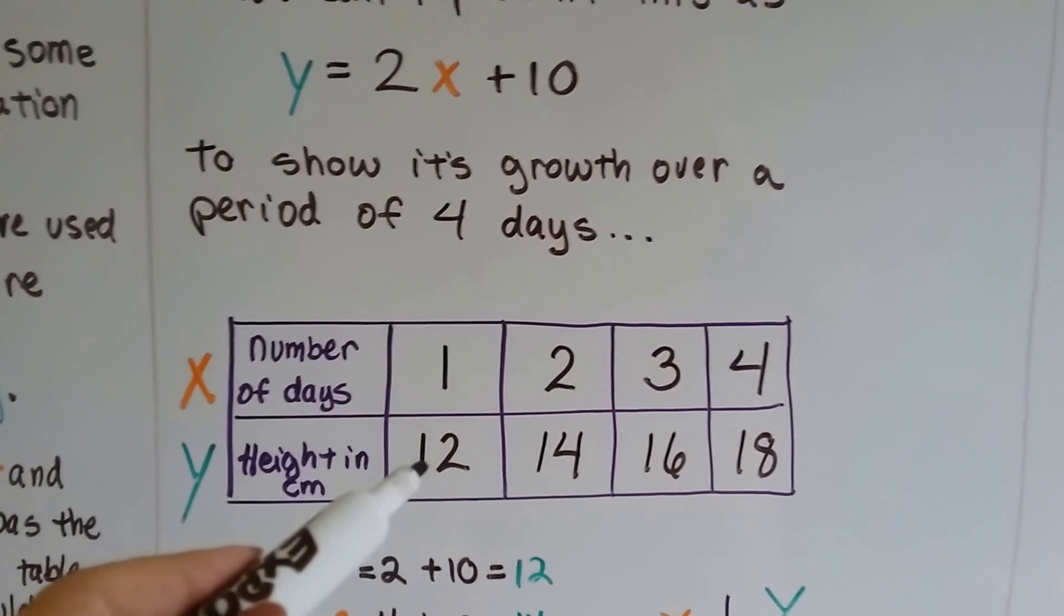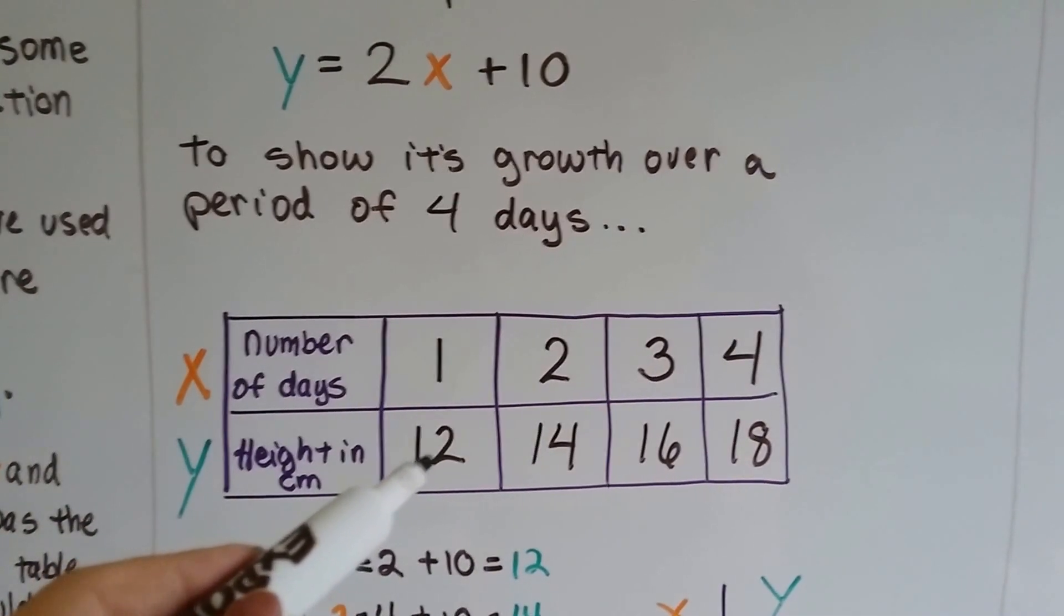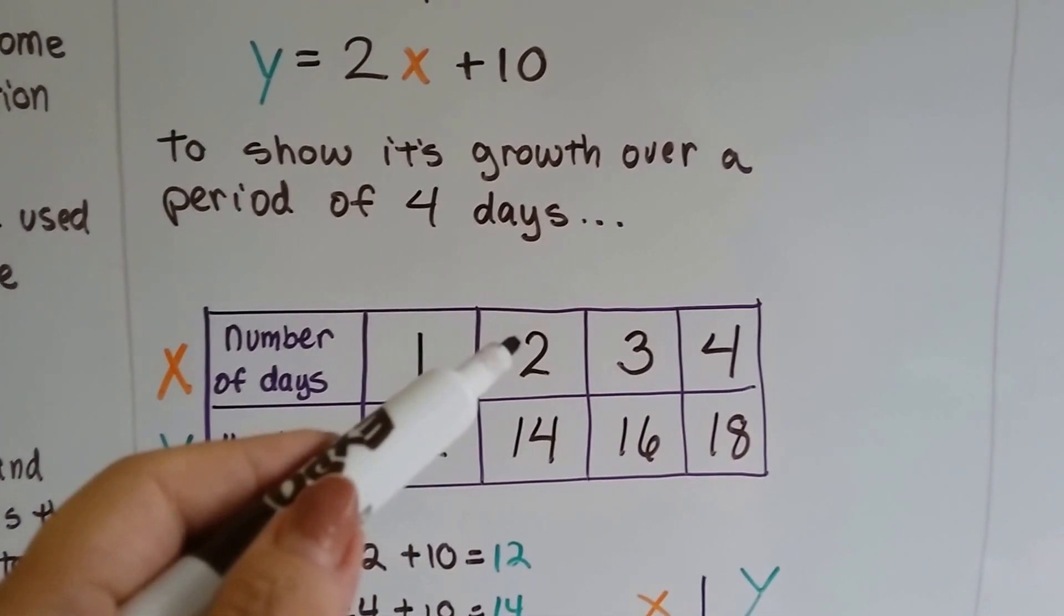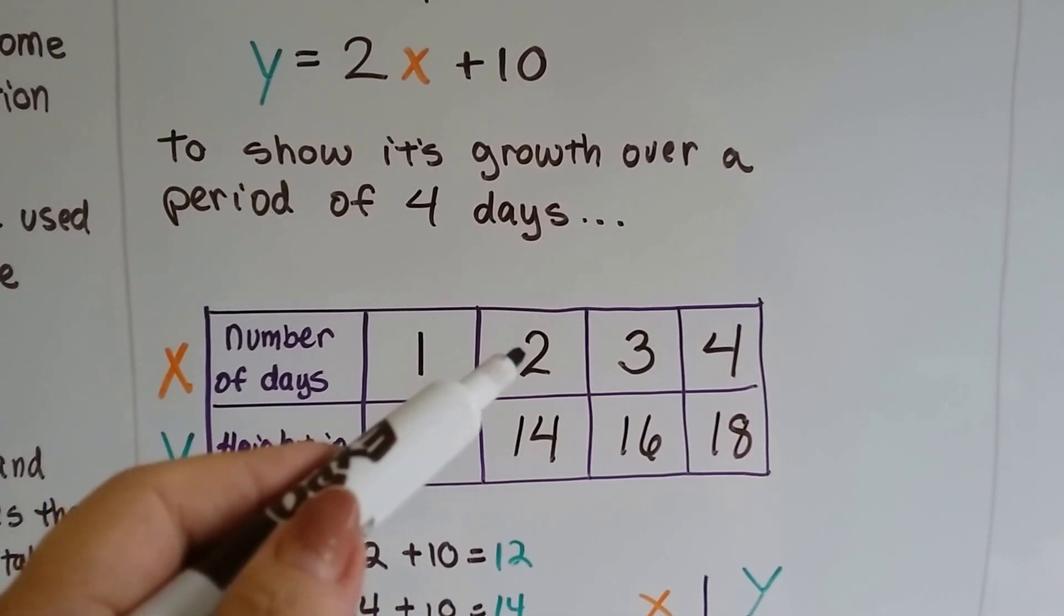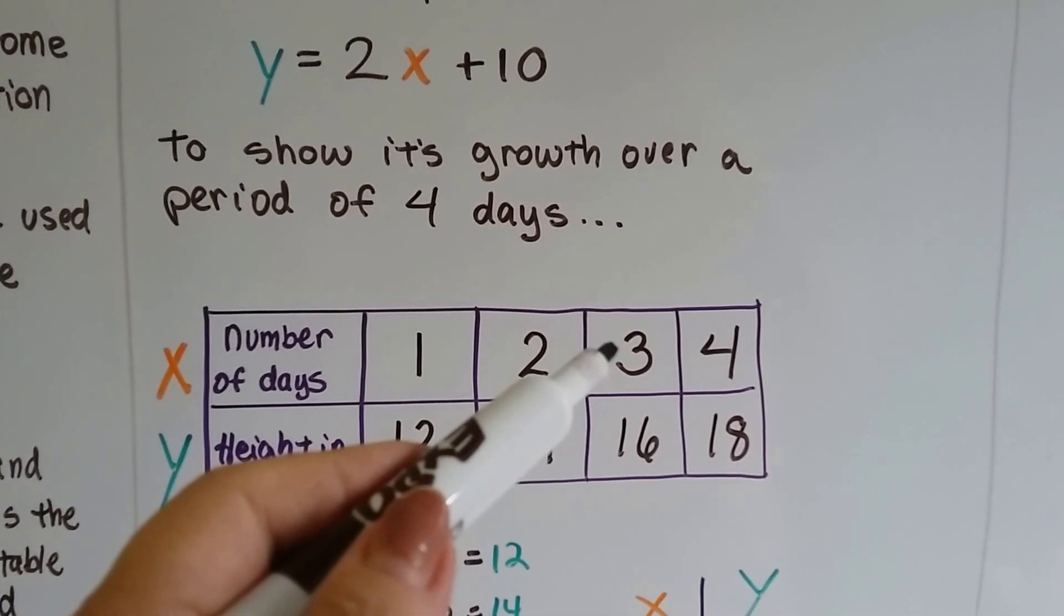You add that to its original height of 10 centimeters when she bought it, and at the end of the first day it's now 12 centimeters. And the second day it grew another 2 centimeters. So now that was 2 times 2 is 4 plus the 10.